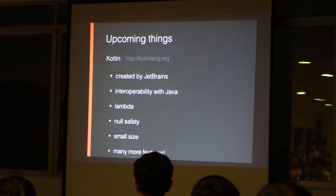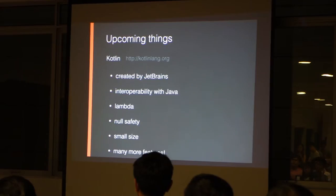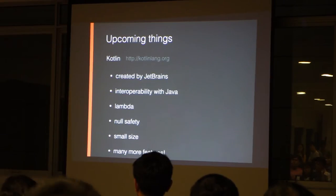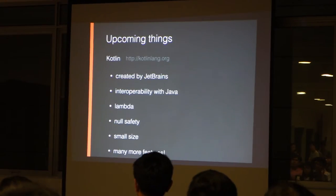So why are we talking about Kotlin? Because Android currently only supports Java 7, and Java is now at version 10. There are a lot of much better features that you can use, but it may take forever for Android to catch up to Java 10, so Kotlin is a very attractive option.